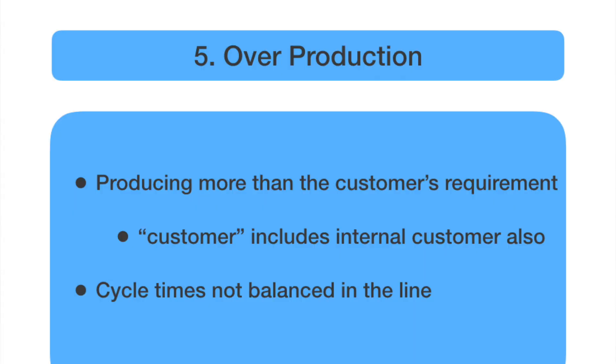The next waste is overproduction — when a company produces more than the customer's requirement. For example, a company gets an order for 1,000 units but plans to produce 1,050 to make up for expected rejections or rework. That extra 50 is overproduction. But this is not the only type of overproduction that happens in a company.